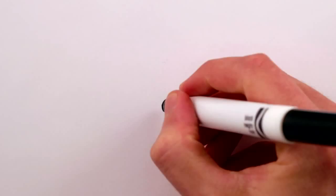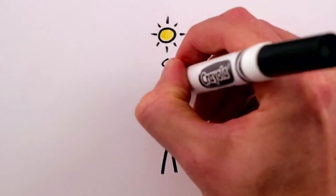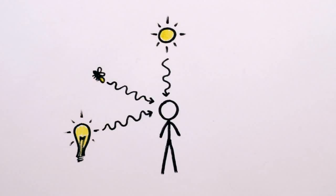In order for us to see something, it either needs to emit light directly, like the sun or a lightbulb filament or firefly, or else have photons of light bounce off of it and into our eyes.